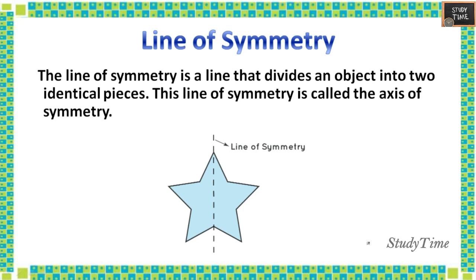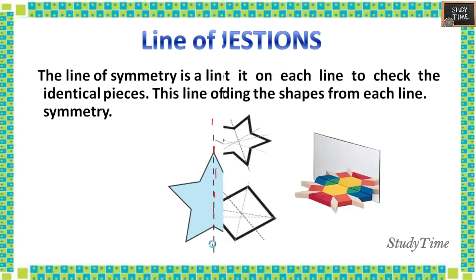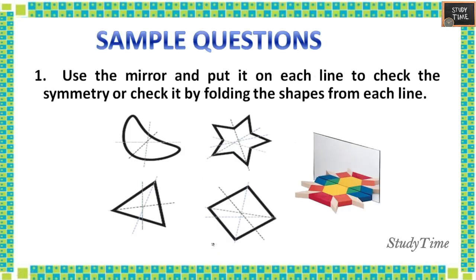Line of symmetry: the line of symmetry is a line that divides an object into two identical pieces. This line of symmetry is also called the axis of symmetry. Here, this line is the line of symmetry.